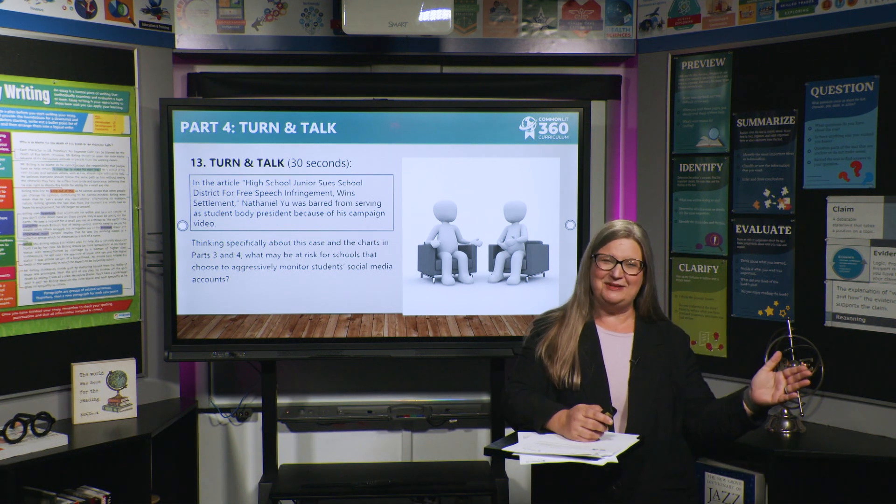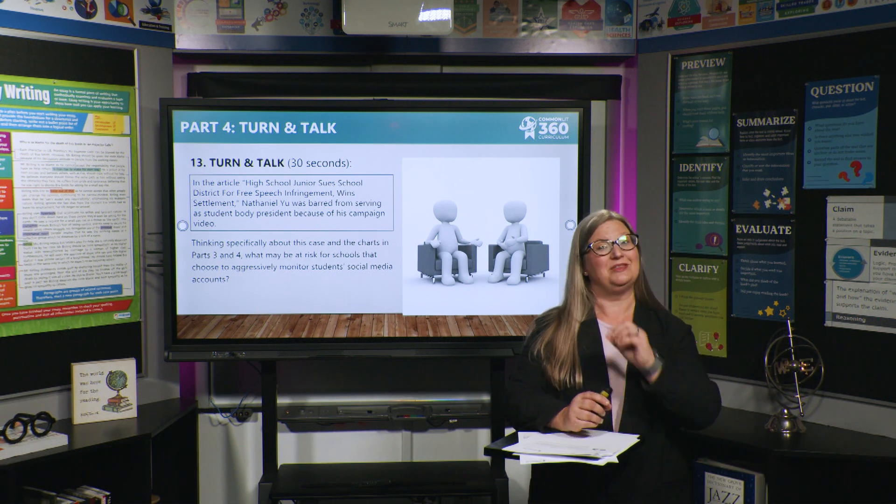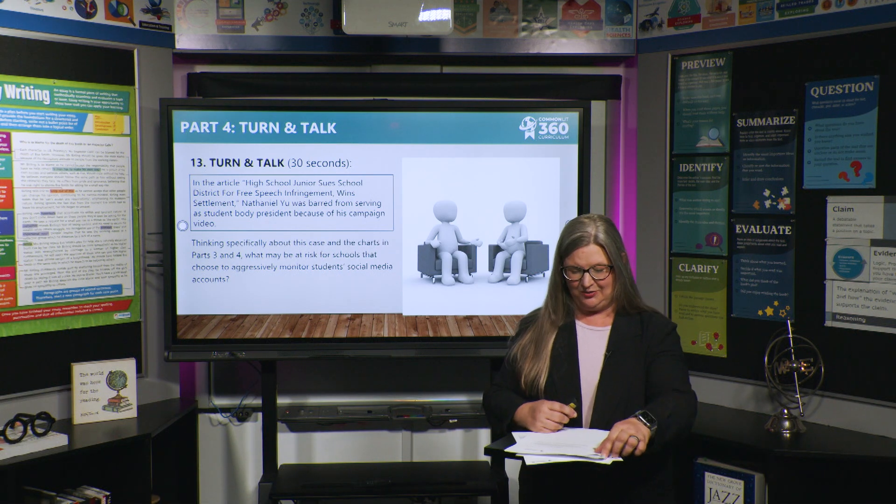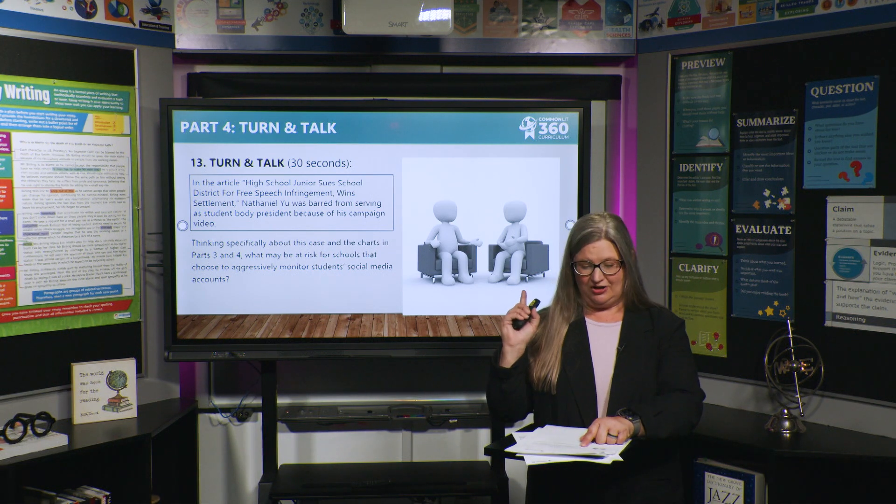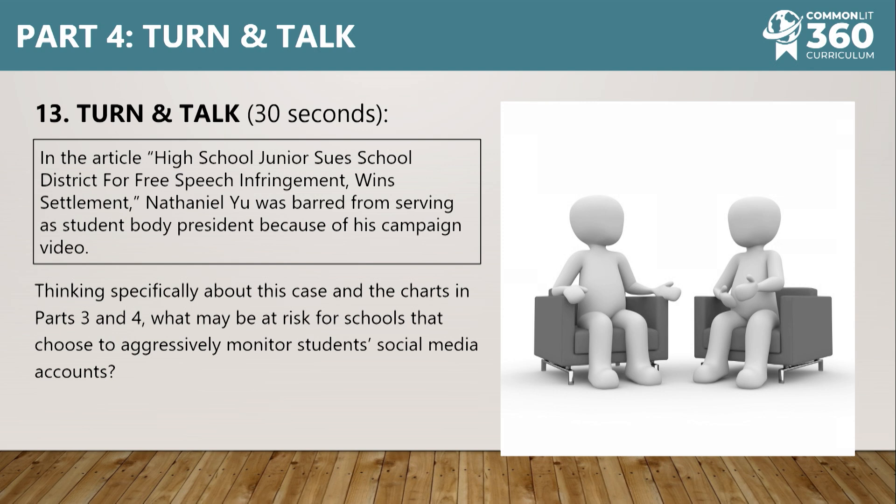Just like we did with the last data, turn and talk with a different partner and answer the question: in the article 'High School Junior Sues School District for Free Speech Infringement and Wins Settlement,' Nathaniel Yu was barred from serving as student body president because of his campaign video. Think more specifically about this case and the charts in parts three and four — what may be at risk for schools that choose to aggressively monitor students' social media accounts? Write your answers on your handout.